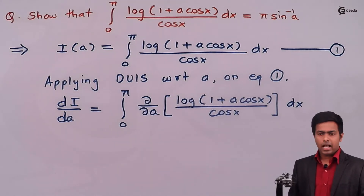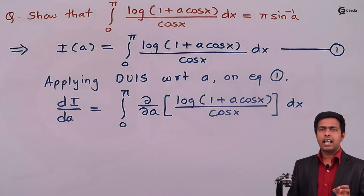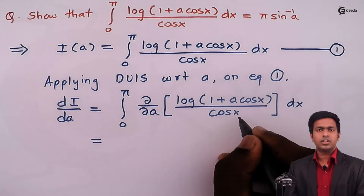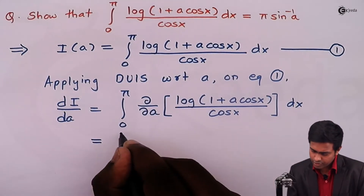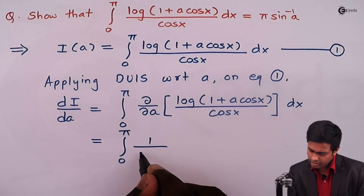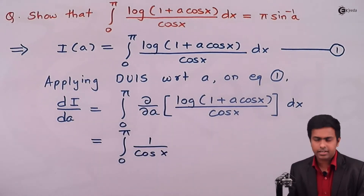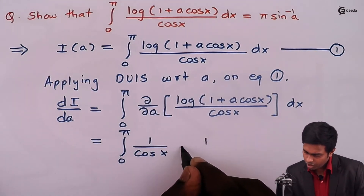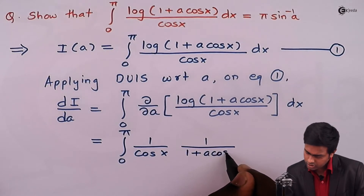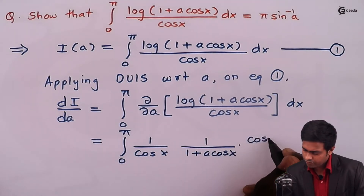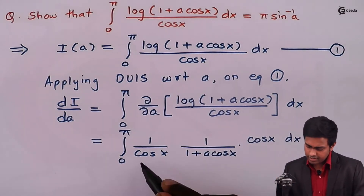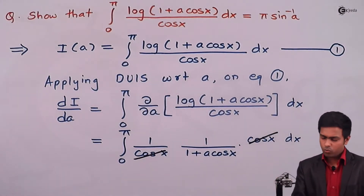Now let's differentiate this function partially with respect to a. We consider x as constant since a is the variable. Because x is constant, cos x becomes constant. The integral from 0 to π remains as is, with 1/cos x outside the bracket, and differentiating the log with respect to a gives 1/(1 + a·cos x) multiplied by cos x dx. We can then cancel the cos x terms.